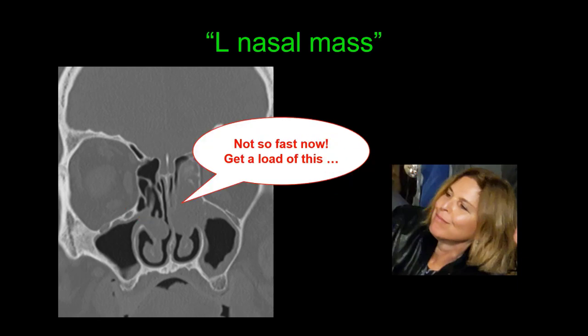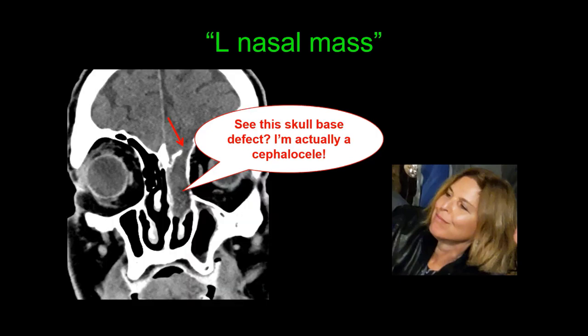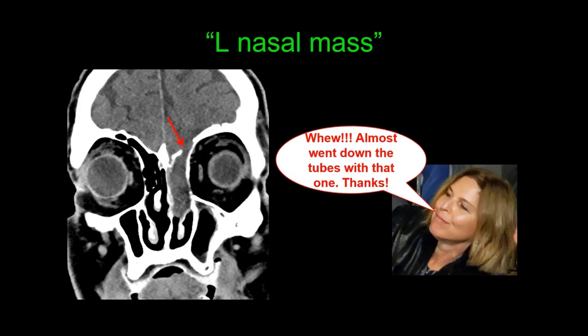If I'm lucky, the mass will speak to me again and say: not so fast. You really need to look very carefully at the rest of the images. The mass may say: see this skull base defect, pointing to a defect in the left ethmoid roof — I'm actually a cephalocele. I'll breathe a big sigh of relief: almost went down the tubes with that one. Thank you mass for keeping me out of trouble.